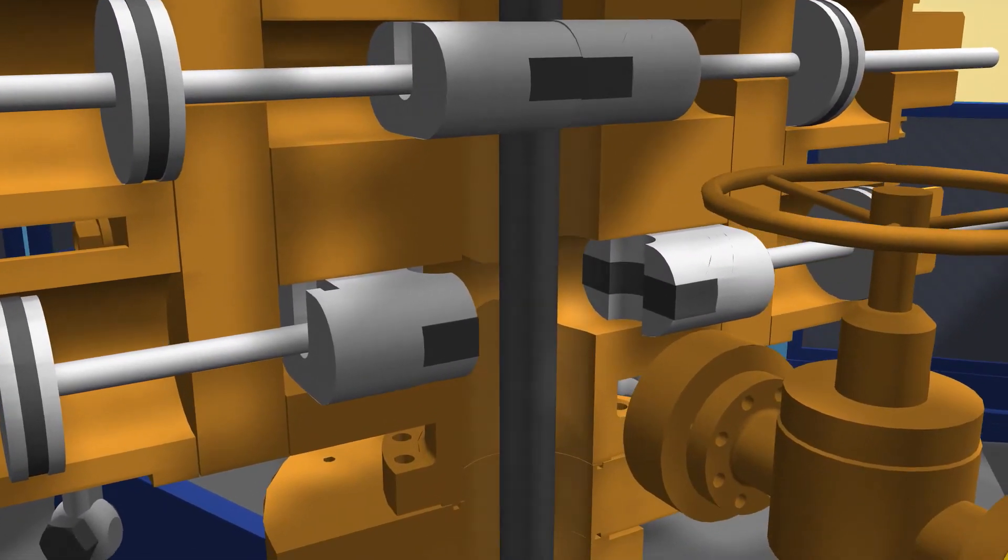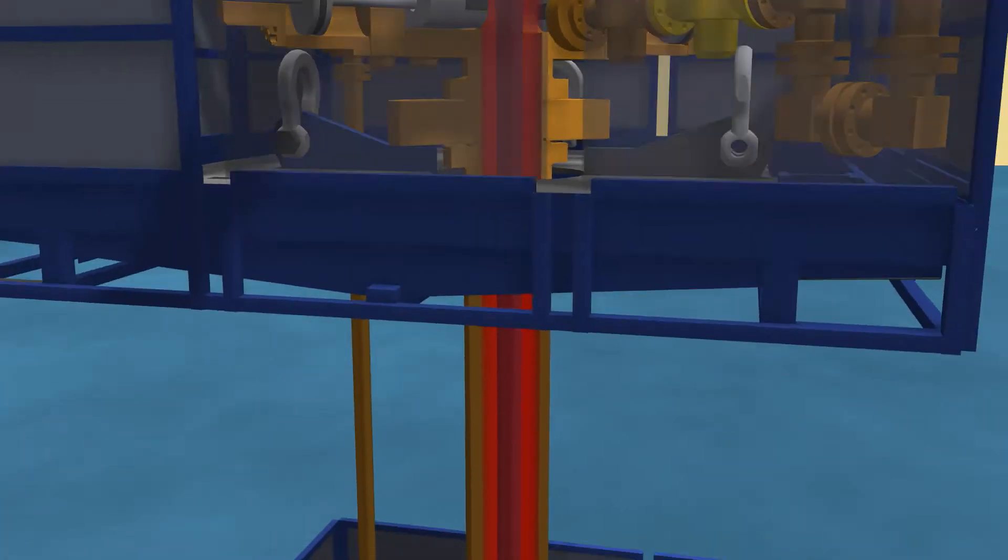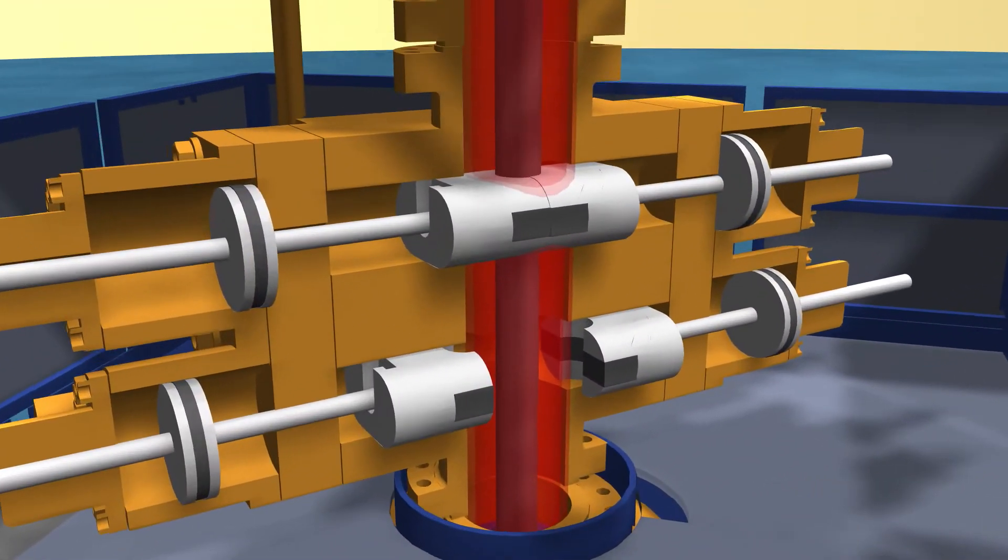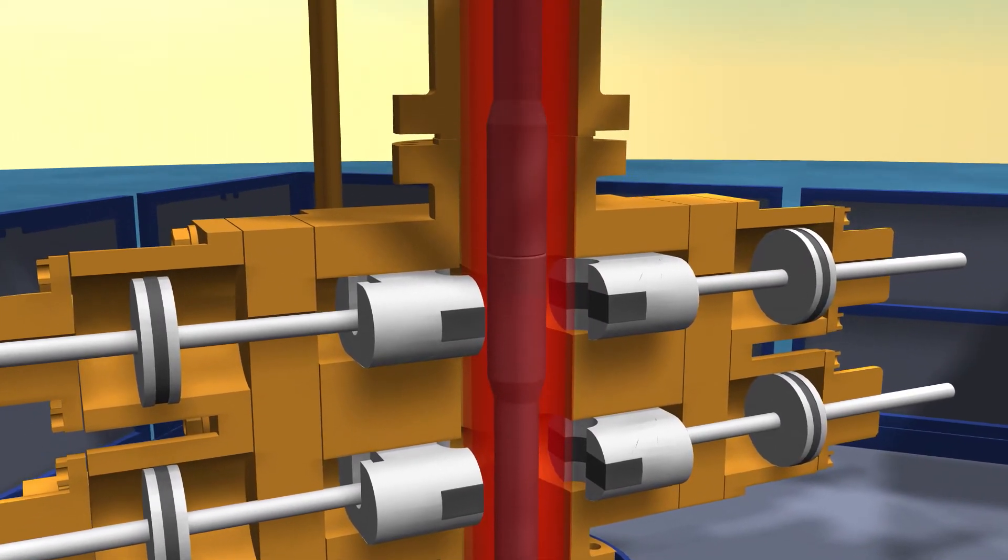Next, the pressure between the BOPs is equalized again. With equal pressure, the bottom BOP can be opened again, allowing the next tool joint to be stripped out.